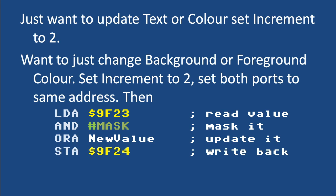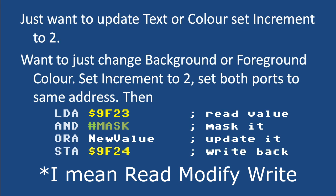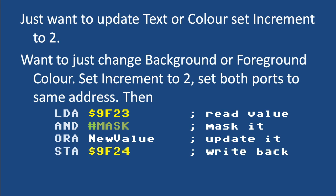If you just want to update the text or color, you can set the increment to 2 and this will skip the other value you didn't want to change. If you get into a read-write-modify situation — such as changing all the background color for a fade, or updating the foreground color while leaving the background the same — you need to set both ports to the same address, then read from one, mask the value, and then store. Because both ports have the same increment — either one or two depending on what you're doing — and they're pointing to the same location, they march together. This is a case where having two ports really does help.